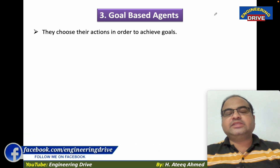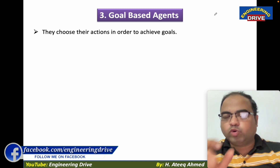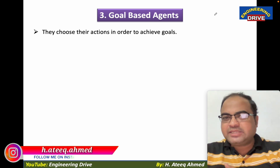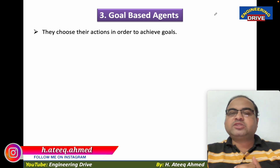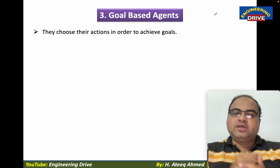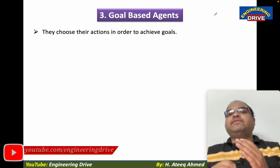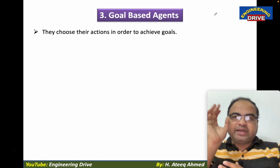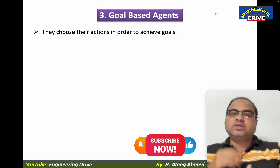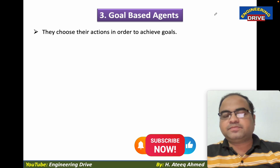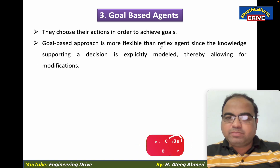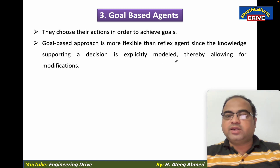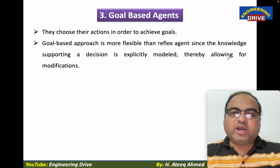Goal-based agents choose their actions in order to achieve goals. The differentiating factor of goal-based agents compared to the previous two types of agents is that they always generate actions based on certain goals. They keep in mind some goals and based on those goals, they perform the actions. The goal-based approach is more flexible than reflex agents since the knowledge supporting a decision is explicitly modeled, thereby allowing for modifications.